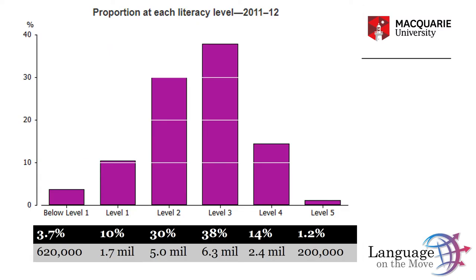To get an idea of different literacy levels in Australia, let's look at a set of data from the Australian Bureau of Statistics. This data set distinguishes between six different levels of literacy. What the diagram shows is that there is significant variation within the Australian population when it comes to literacy and that different people read at different levels.